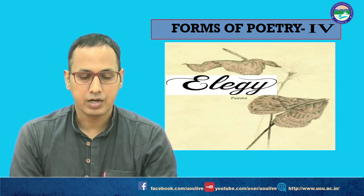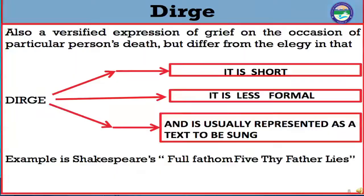Now let us come to another form related to elegy — the dirge. It is also a versified expression of grief on the occasion of a person's death, a lamenting poem. But it differs from the elegy in some ways: the dirge is shorter than the elegy, less formal — the elegy being very formal and a very conscious work of art. The dirge is usually represented as a text to be sung. An example is Shakespeare's 'Full Fathom Five Thy Father Lies'.